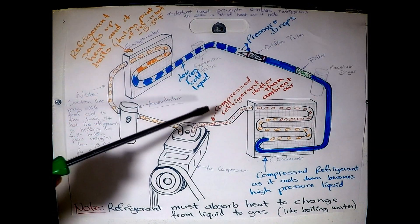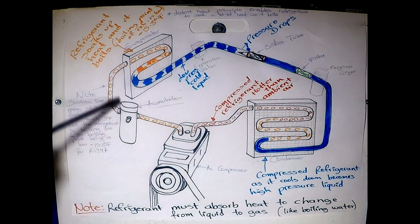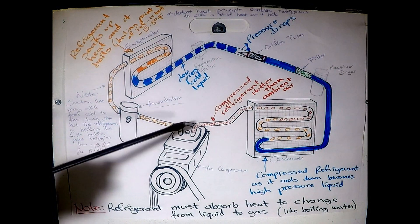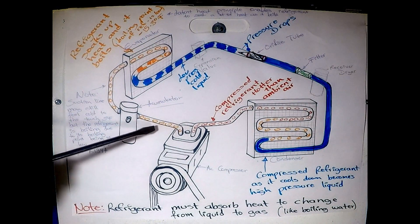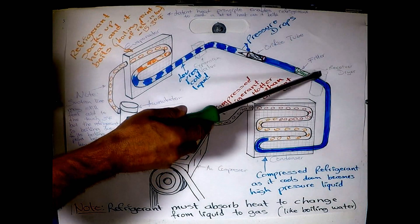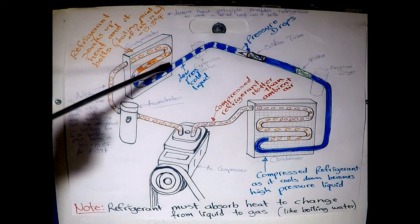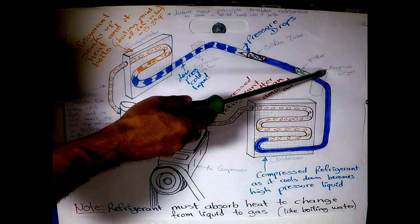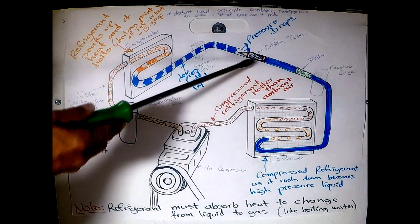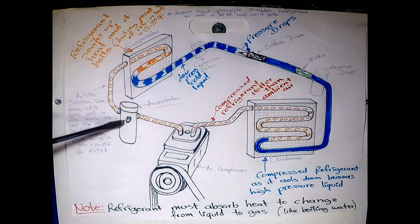So if you notice the two systems, the accumulator is on the low side, you'll see what that means in a second, versus the receiver dryer being on the high pressure liquid line, and the expansion valve is going to be closer to the evaporator. So if you see an expansion valve, your vehicle is going to have a receiver dryer most likely, and if it has an orifice tube, it's going to have an accumulator.